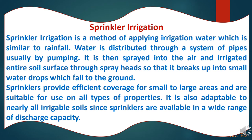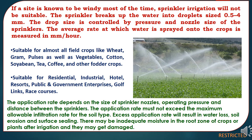The second method of micro-irrigation is sprinkler irrigation. Sprinkler irrigation is a method of applying irrigation water similar to rainfall. Water is distributed through a system of pipes, usually by pumping, then sprayed into the air and irrigates the entire soil surface through a spray head, breaking up into small water drops which fall to the ground. Sprinklers provide efficient coverage for small to large areas and are suitable for use on all types of properties, adaptable to nearly all irrigable soils. The sprinkler breaks up water into droplet sizes of 0.5 to 4 mm; drop size is controlled by pressure and nozzle size. The average rate at which water is sprayed onto the crop is measured in mm per hour.